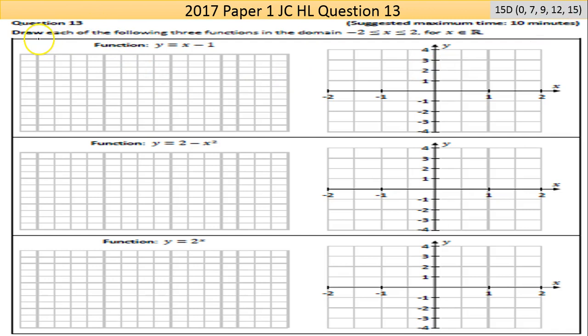The question asks: draw each of the following three functions in the domain minus 2 is less than or equal to x is less than or equal to 2, where x is an element of R, so it's a real number. A real number just means basically any number minus the complex, but you haven't come across complex numbers yet. You will in Leaving Cert. The x values here we're concerned with start at minus 2, so x is greater than or equal to minus 2. The next numbers are minus 1, 0, 1, and 2. Anything outside that is beyond our scope in this question.